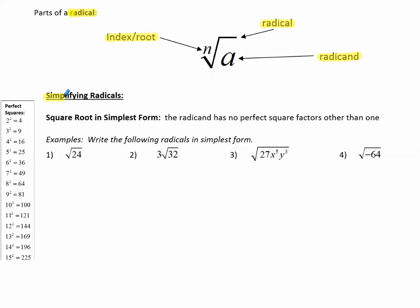Today we're going to focus on simplifying radicals, starting with the square root. When the square root is in simplest form, the radicand — that part under the radical — has no perfect square factors other than 1. The square root is written without an index, though an index of 2 could be shown; both mean the same thing. Simplest form means there are no perfect square factors left in the radical.